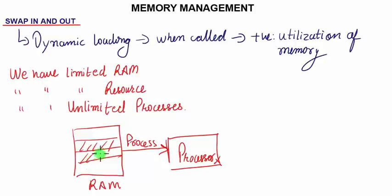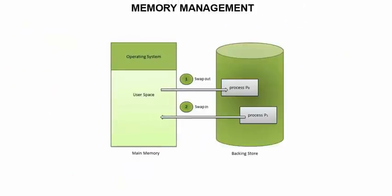So now how would things turn? We clearly said limited RAM, limited resource, unlimited processes. So obviously the RAM would get full, and somewhere we need to remove certain data so that data can have space for growing. The same concept can be understood with this diagram. We have user space in which we can store processes whichever is needed.